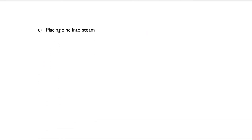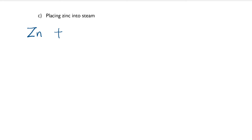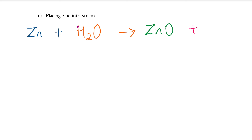Let's try the last one: placing zinc into steam. Zinc (Zn) reacts with steam, which is H₂O. This is a reaction from this chapter — it forms zinc oxide (not zinc hydroxide, since hydroxide forms for more reactive metals higher in the reactivity series). You also form hydrogen gas.